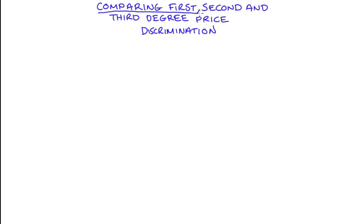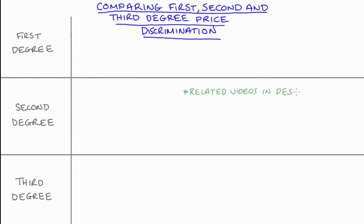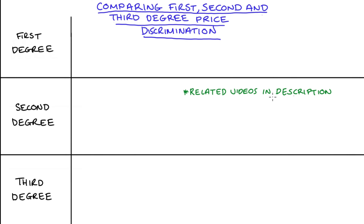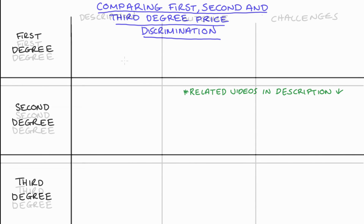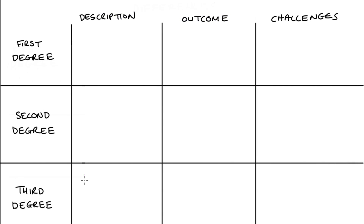Hi everyone. In this video I'm going to compare first, second, and third degree price discrimination. These strategies can be quite complex in their own right, so I have done separate videos on all of these that are more detailed than what I'll do here — I'll link to those videos below. Comparing these three methods does give a nice review. On the screen I have a column for a description of each type, one for outcomes, and one for the challenges.